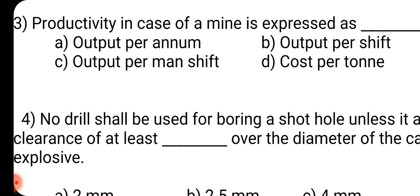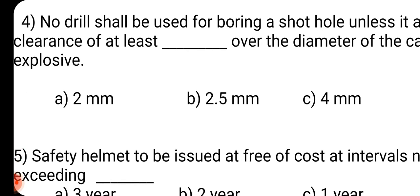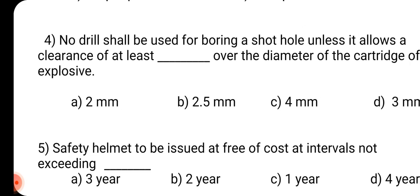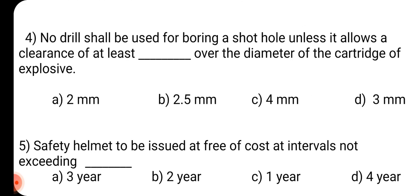Question number 3: Productivity in case of a mine is expressed as dash. Answer is C: Output per man shift. Question number 4: No drill shall be used for boring of a short hole unless it allows a clearance of at least dash over the diameter of the cartridge of explosive. Answer is D: 3mm.